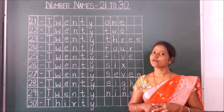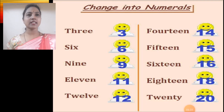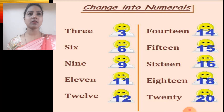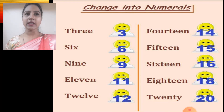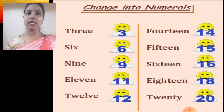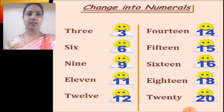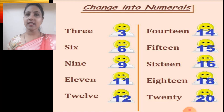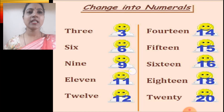Now we will do one activity. This is the PDF which we had sent you before. Here you have to change number names into numerals. Let's read it. T-H-R-E-E is 3, so you have to write 3. S-I-X is 6, so you will write 6. N-I-N-E is 9, so you will write 9.